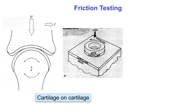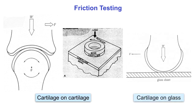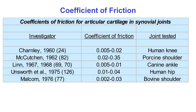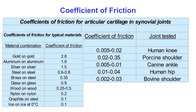Cartilage friction can be tested cartilage on cartilage, with or without synovial fluid, or cartilage on another material such as glass. Here are the coefficients of friction for various articular joints. Typical values are as low as 0.01 or less. Comparing these friction coefficients to other materials, you can see that cartilage friction is one to two orders of magnitude lower.